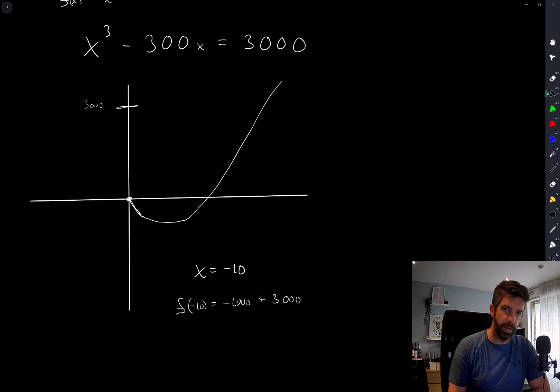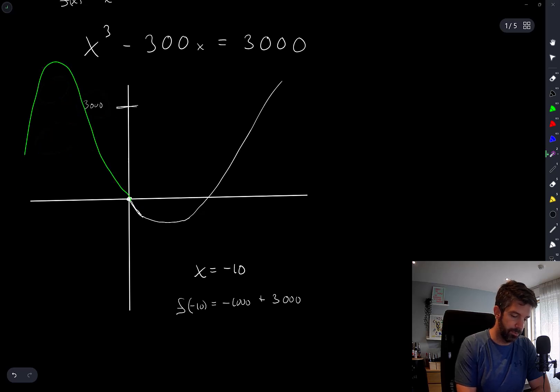What I can do is I can find where the derivative of this is equal to zero. One of the values will be here. The other one will be the maximum of this function in this region. And if I compute that local maximum, if it's greater than 3000, then I know it goes above and comes back down below.